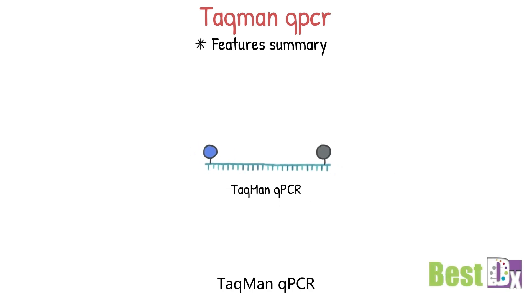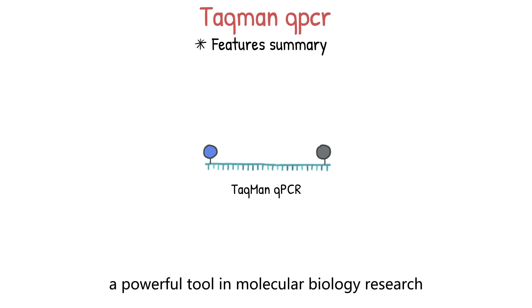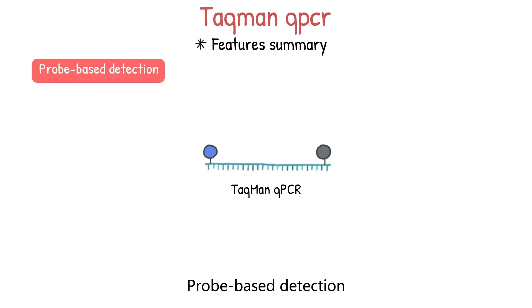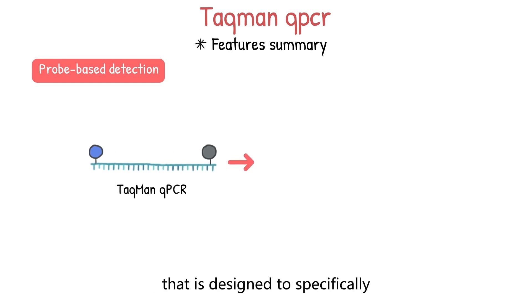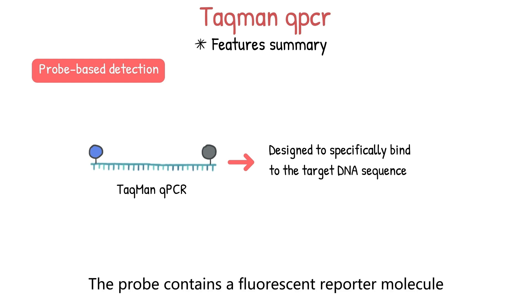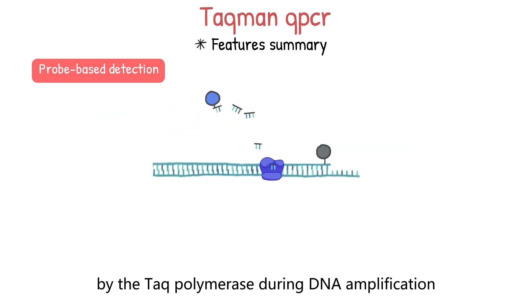TaqMan qPCR has several important features that make it a powerful tool in molecular biology research. First, probe-based detection: TaqMan qPCR uses a special type of probe designed to specifically bind to the target DNA sequence. The probe contains a fluorescence reporter molecule and a quencher molecule that suppresses its fluorescence until it is cleaved by the Taq polymerase during DNA amplification.